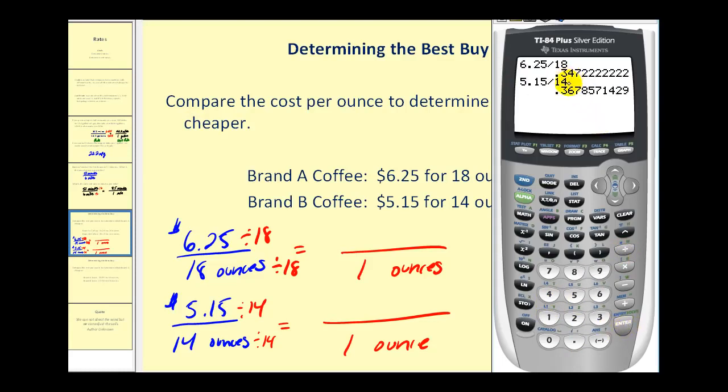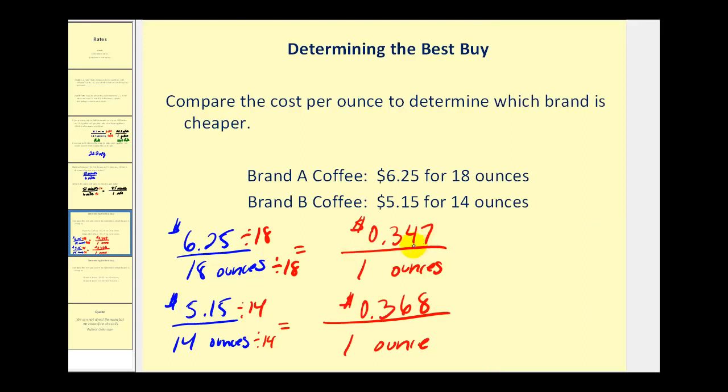You can see that brand A is almost 35 cents per ounce, while brand B is almost 37 cents per ounce. Let's go ahead and record this information on the screen. From this, we can see pretty easily that brand A is cheaper.